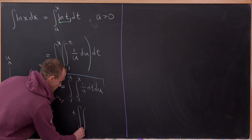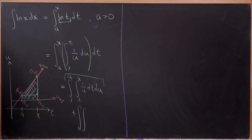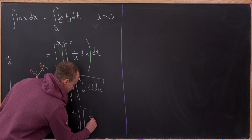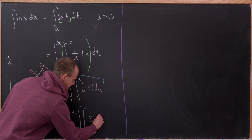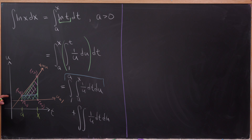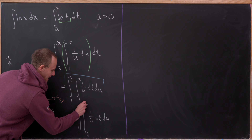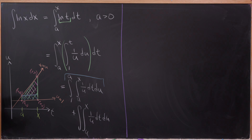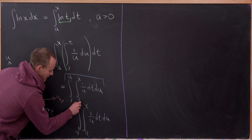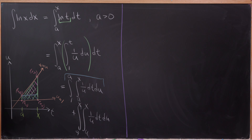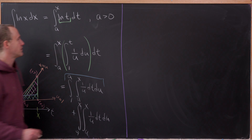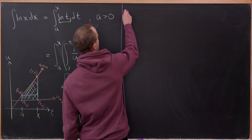Then we need to add the magenta triangular part: the double integral of 1 over u dt du. But now the t values go from u up to x — slightly different because we've got a variable in that lower bound. And then the u values go from a up to x.